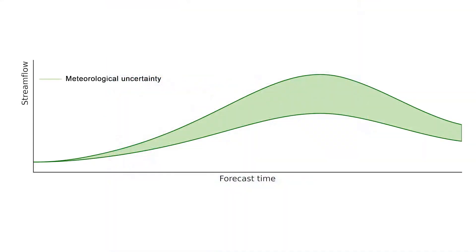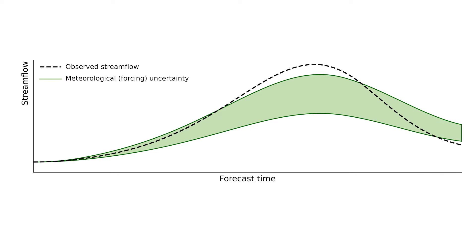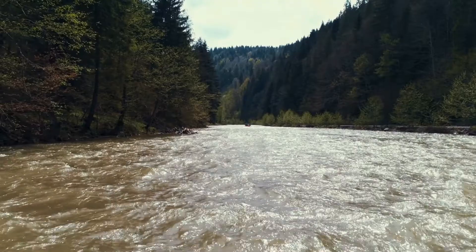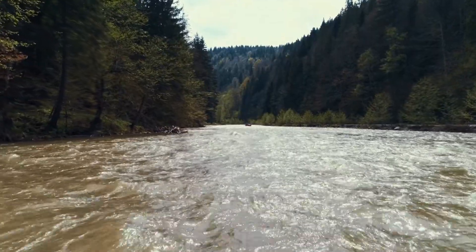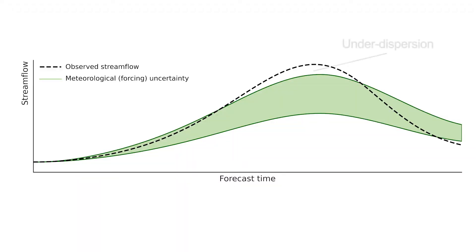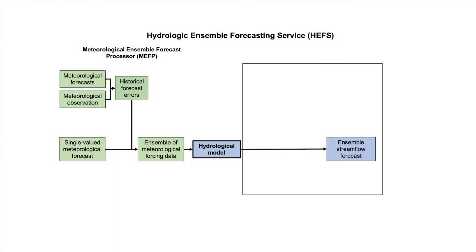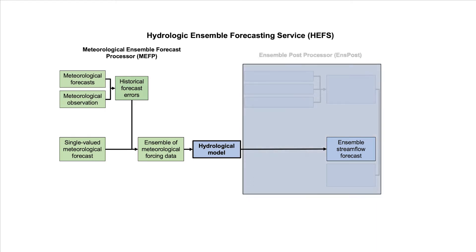However, if the uncertainty were only coming from the meteorology, an ensemble streamflow forecast might not capture an adequate range of possible outcomes. This is because the hydrology also introduces uncertainty. We call this a lack of spread, or under-dispersion. This is why HEFS also captures uncertainty using another component known as the Ensemble Post Processor, or ONSPOST. ONSPOST is the component of HEFS that adjusts the ensemble of raw streamflow forecasts to account for uncertainty and correct for bias, both of which originate from the hydrological modeling.